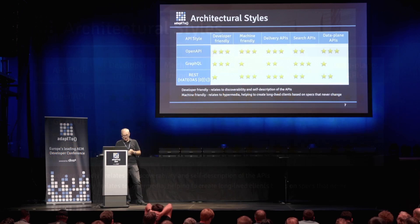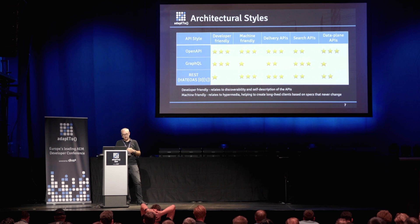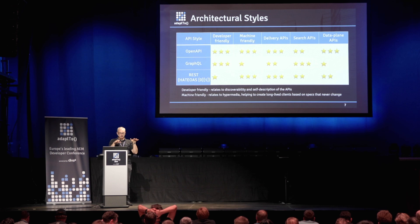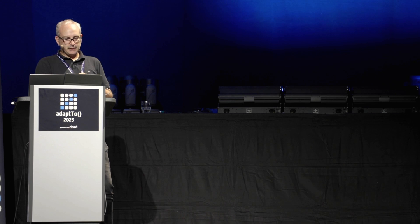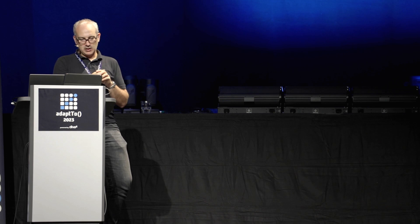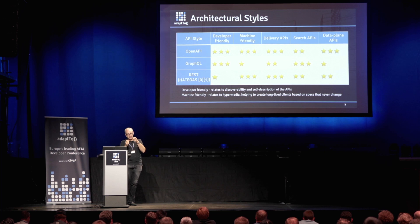REST is driven by hypermedia. If there's no hypermedia, there's no REST. There are two references on the slide — one to the Richardson maturity model, and another to an article that Roy himself wrote about what it actually means to fulfill the REST requirements, because it's not just a set of principles, it has requirements. I grouped those APIs into five categories. Developer friendliness means how easy they are to discover and how self-documenting they are. Machine friendliness relates to hypermedia — it allows you to create a long-lived client based on those specs. Think about how the web works: it didn't change much from when it appeared.